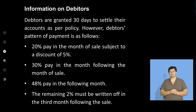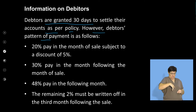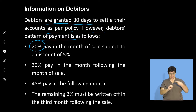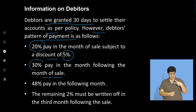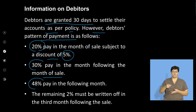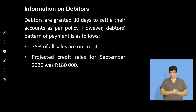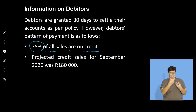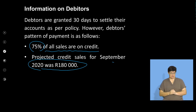Debtors are granted 30 days to settle their accounts as per policy. The payment pattern is: 20% pay in the month of sale subject to a discount of 5%; 30% pay in the month following the month of sale; 48% pay in the following month; and the remaining 2% must be written off in the third month as a bad debt — an irrecoverable debt. Also, 75% of all sales are on credit, and projected credit sales for September will be 180,000 Rand.